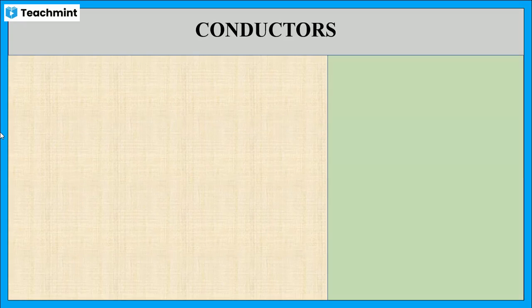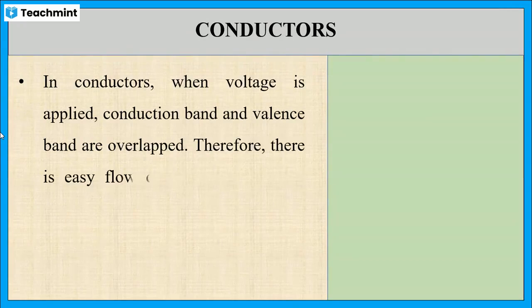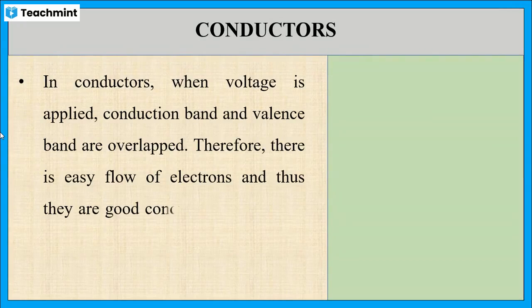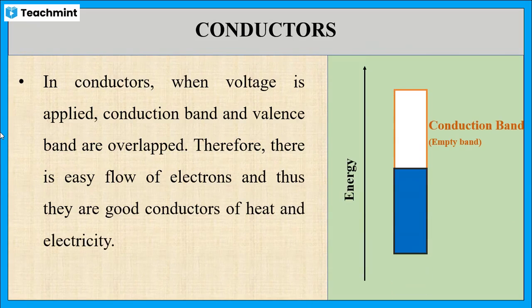A conductor may conduct electricity through the movement of electrons or ions. Conductivity of any metal depends upon the number of valence electrons available per atom. In conductors, by the application of electric field, the conduction band and the valence band are overlapped. We can see in this figure that when the voltage is applied, the conduction band and the valence band get overlapped, so that electrons can easily jump from the valence band to the empty conduction band. Hence, the metal shows conductivity.